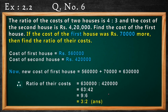The second part is in yellow color. If the cost of the first house was 70,000 more, then find the ratio of the cost. So we have to add 70,000 to the previous price of the first house. The cost of the first house was 5,60,000, so the new cost of the first house is 5,60,000 plus 70,000, which becomes 6,30,000.